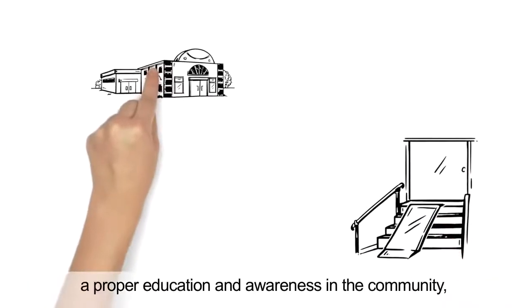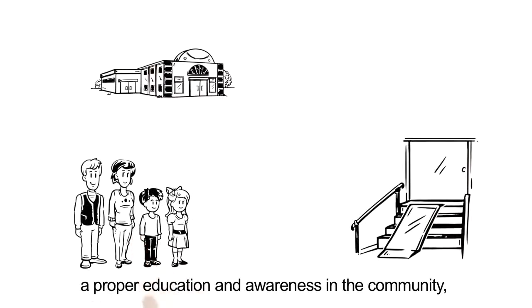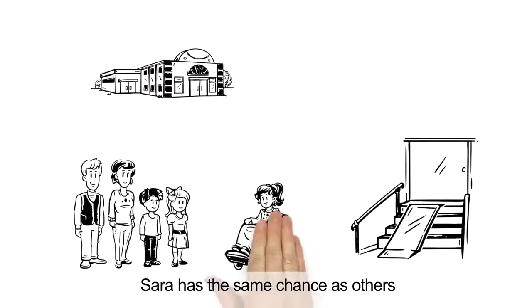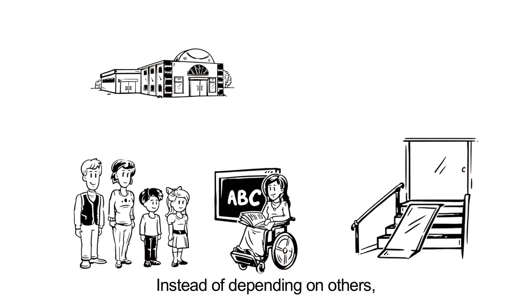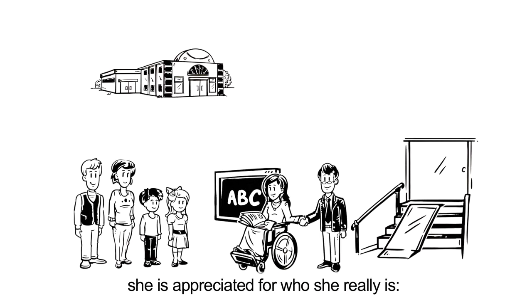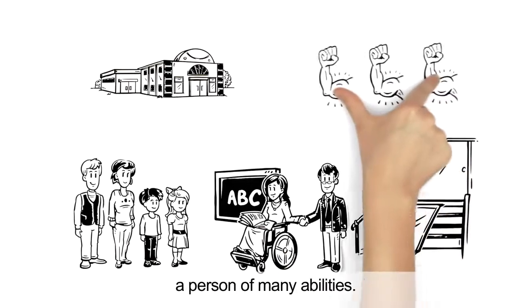With fewer barriers, a proper education and awareness in the community, Sara has the same chance as others of getting the job she wants. Instead of depending on others, she is appreciated for who she really is, a person of many abilities.